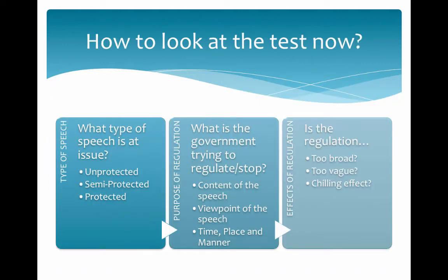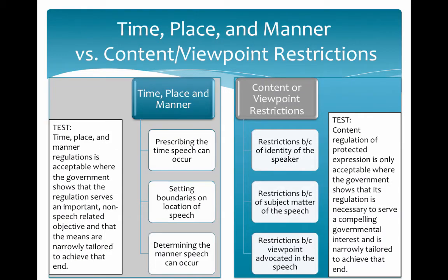We need to go a step further, going back to our three-step process: what type of speech is at issue, what is the government trying to regulate or stop, and what are the effects of the regulation. For time, place, and manner restrictions, it's a rational basis test — the government just needs to be acting legitimately within its powers. For content or viewpoint restrictions, it's strict scrutiny, where the government interest must be shown to be compelling and necessary to sustain the regulation.